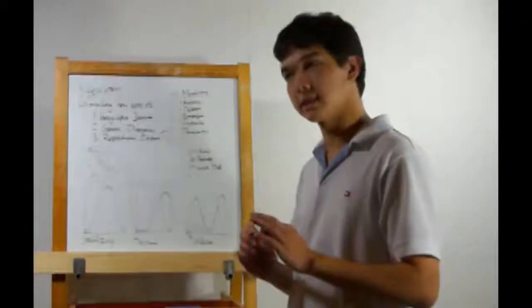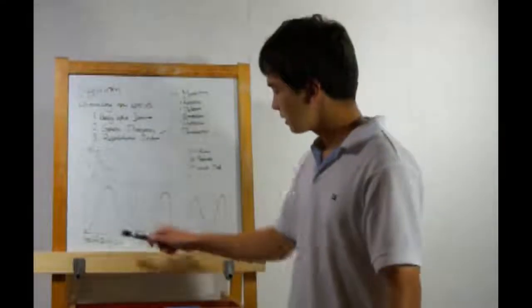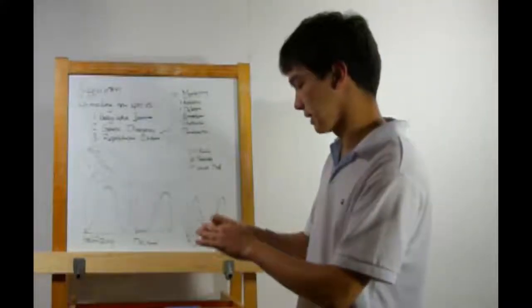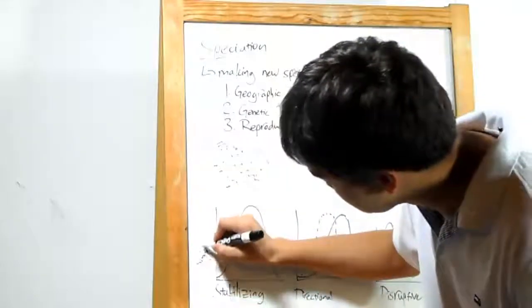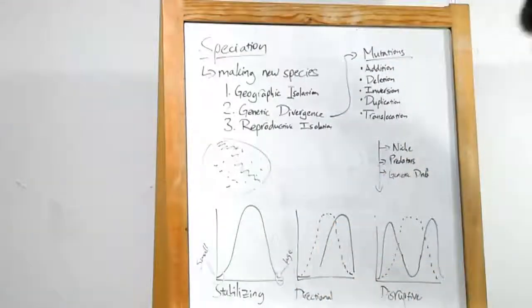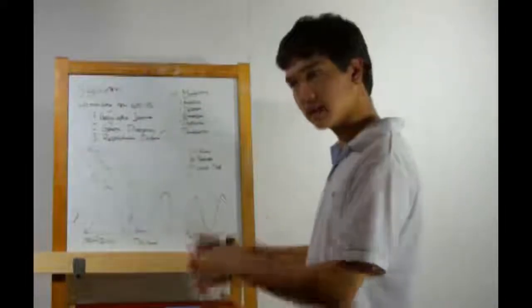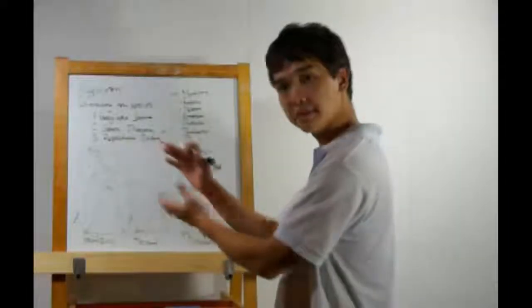Now, we have graphs that describe how genes change over time. The first step is stabilizing selection. Let's actually label these graphs. Towards the left side, we'll have one extreme. How about small beaks? Let's represent finches. And towards the right side, we'll have the other extreme, large beaks. Actually, in the middle, we have medium-sized beaks. Stabilizing selection means that a lot of the organisms that survive and pass on their traits have sort of the middling trait.